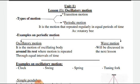Types of motion. Firstly, we have in our life two types of motion: transition motion and periodic motion.